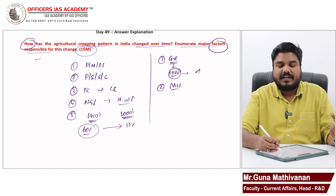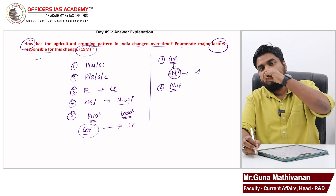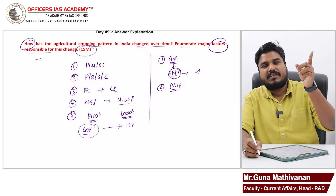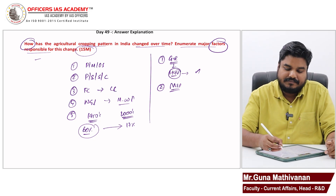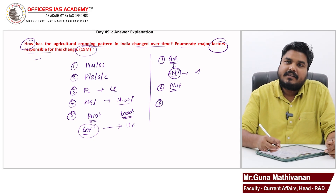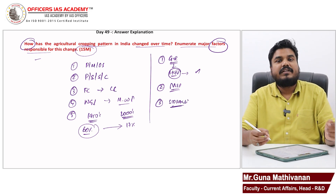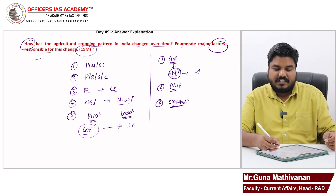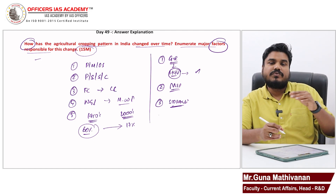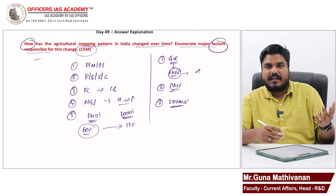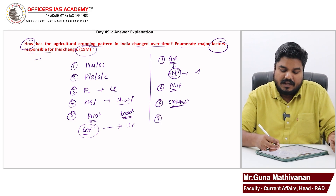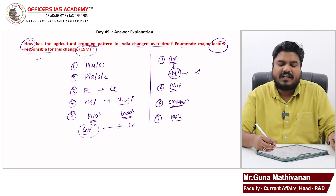Another factor is the Minimum Support Price. When the government announces MSP for certain crops at a higher price, farmers choose to grow those crops, which changes the cropping pattern. Better storage facilities also play a role — today we are able to store food grains for longer periods, which helps farmers choose different crops than what was grown traditionally.